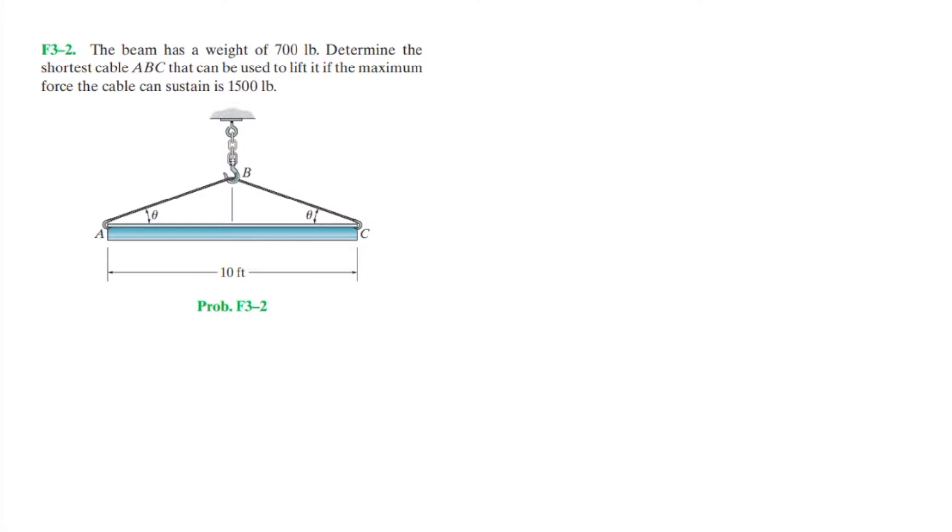Question F3-2 says, the beam has a weight of 700 pounds. Determine the shortest cable ABC that can be used to lift it if the maximum force the cable can sustain is 1500 pounds.